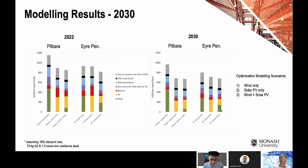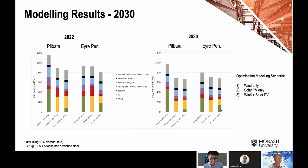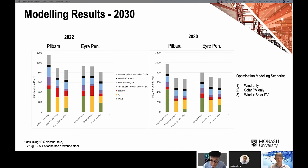Looking at 2030 cost projections, we see moderate cost reduction compared to today's technology costs. Solar PV only in 2030 becomes more cost competitive than the wind-only system, because solar PV has larger room for cost reduction. But again, a well-mixed wind and solar hybrid system remains the most cost competitive option.